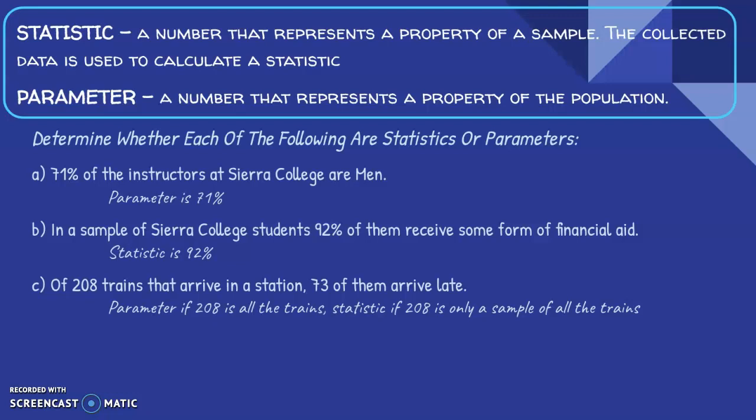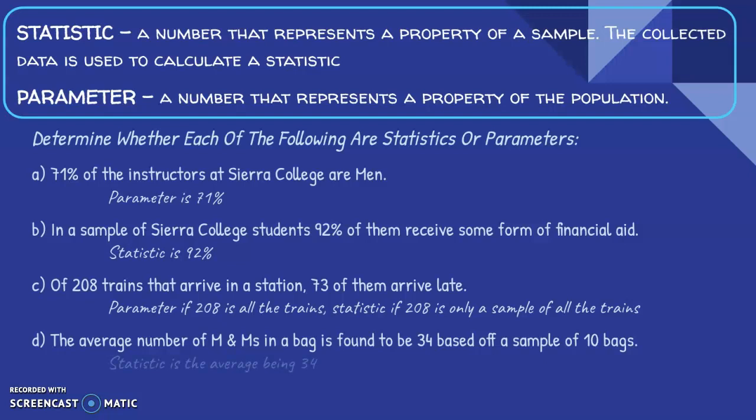And finally, how about the average number of M&Ms in a bag is found to be 34, based off a sample of 10 bags. So pretty straightforward here. It's a statistic because we have information given to us about it being a sample of 10 bags. And so in those 10 bags, we find that 34 is the average number of M&Ms in each of the bags. So the statistic here is an average and that average is 34.